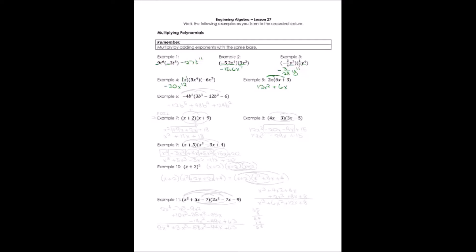When multiplying times 3 different terms inside parentheses, we distribute multiplication and do 3 multiplications. So negative 4b squared times 3b cubed gives negative 12, and b squared times b cubed gives b to the power of 5.